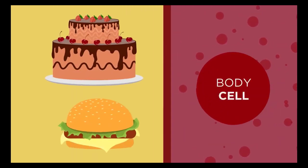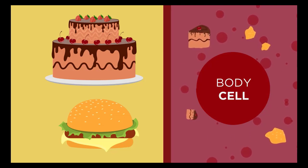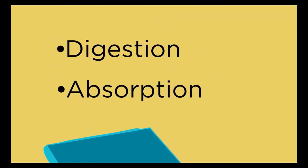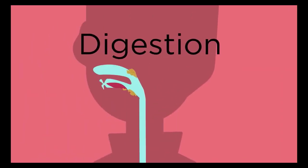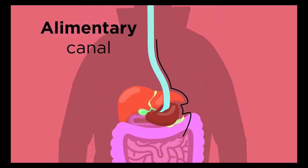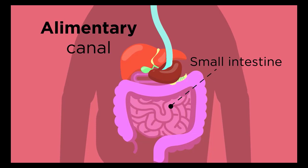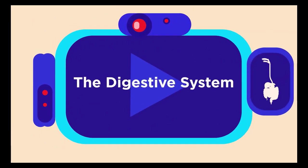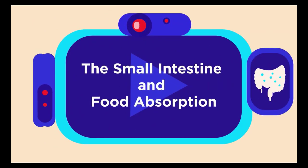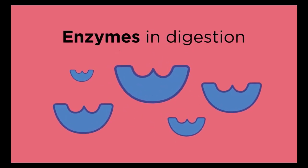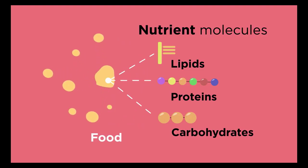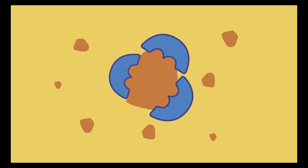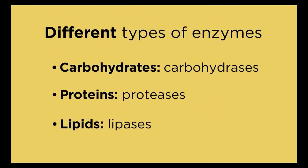How do we get energy from food to our cells? Food needs to be broken down into smaller pieces (digested) and then absorbed into the bloodstream. Digestion takes place along the alimentary canal and absorption happens in the small intestine. Enzymes are essential for digestion as they speed up chemical reactions. Different types of enzymes digest different types of food — the large molecules like lipids, proteins, and carbohydrates are too big to enter the blood, so they are digested into smaller molecules by physical processes like chewing and chemically by enzymes.